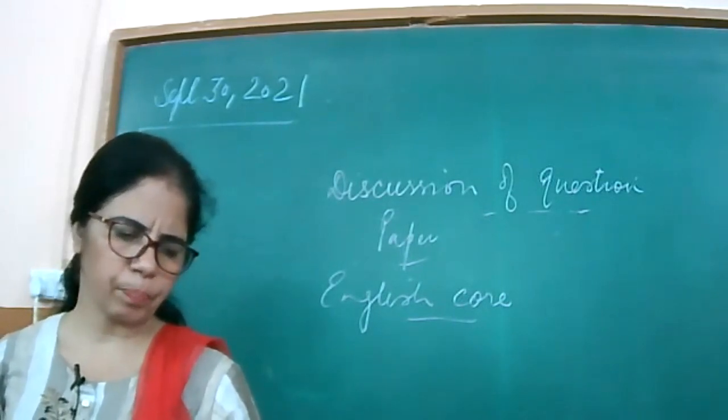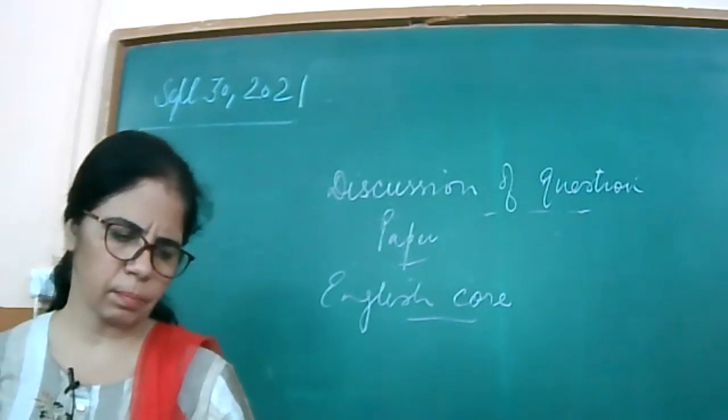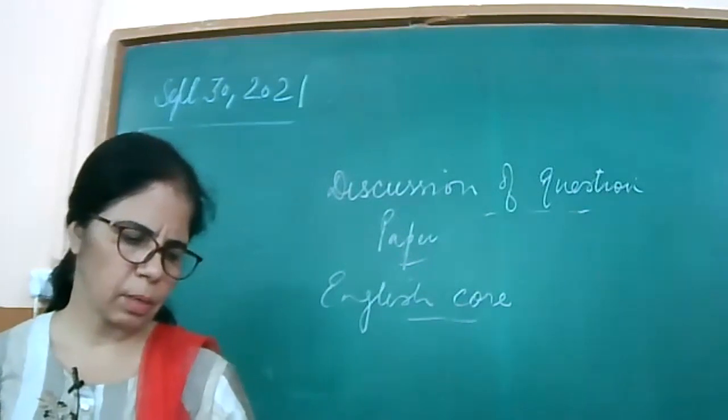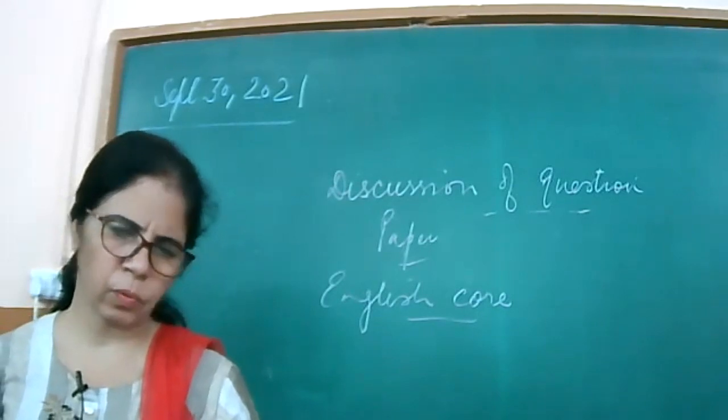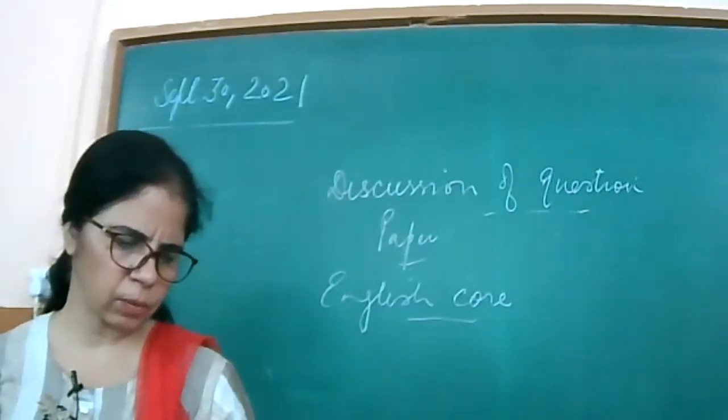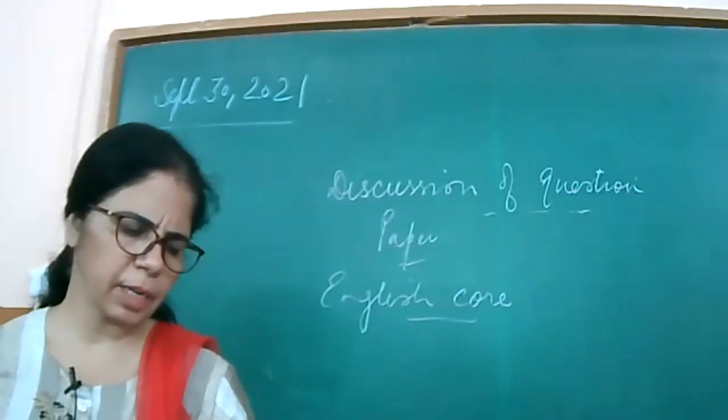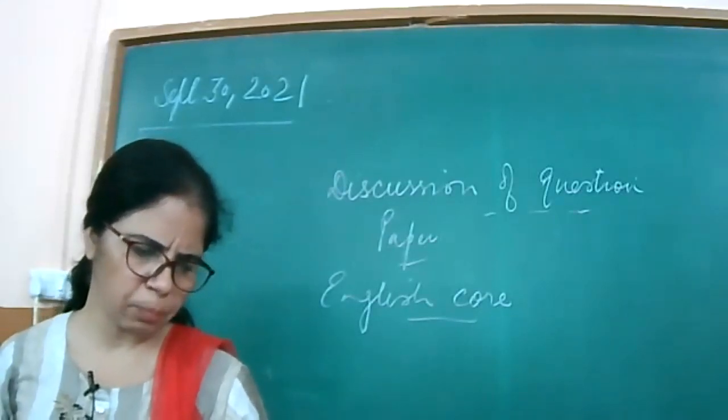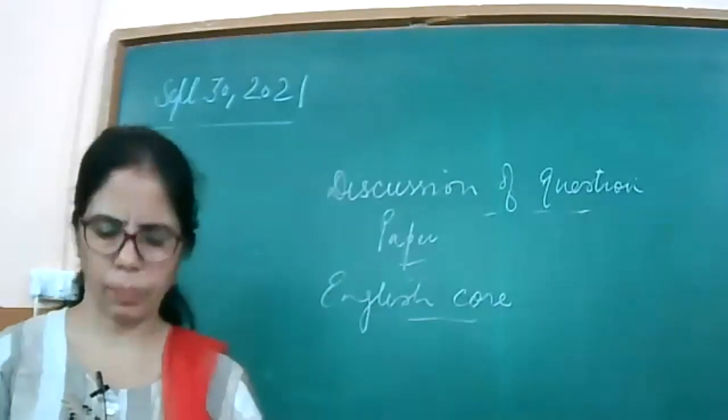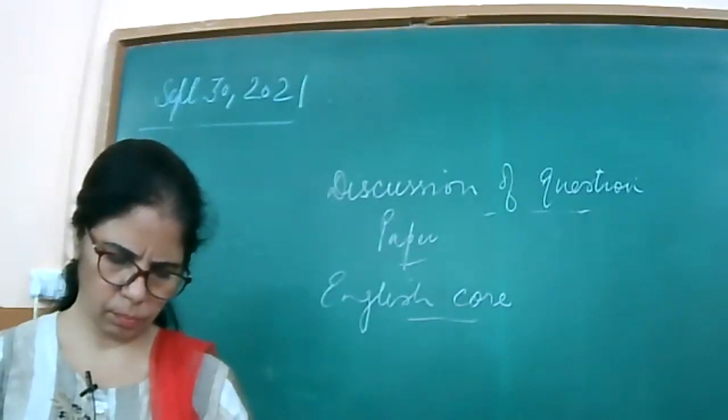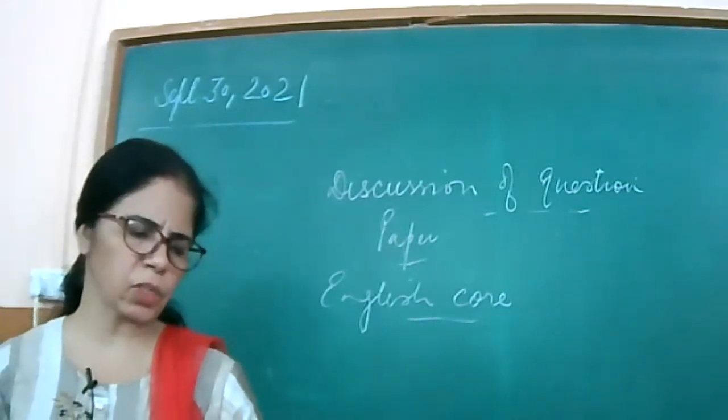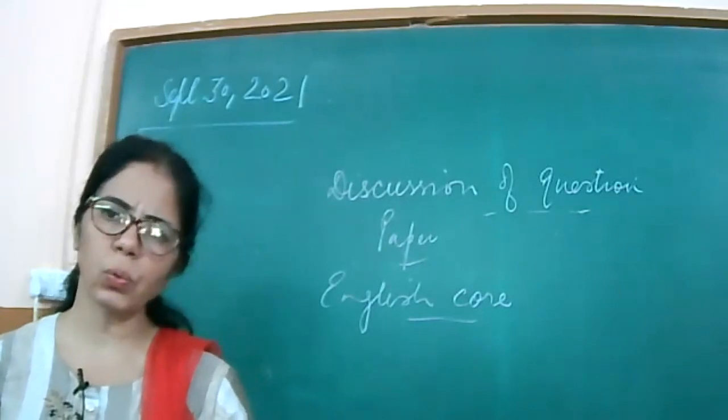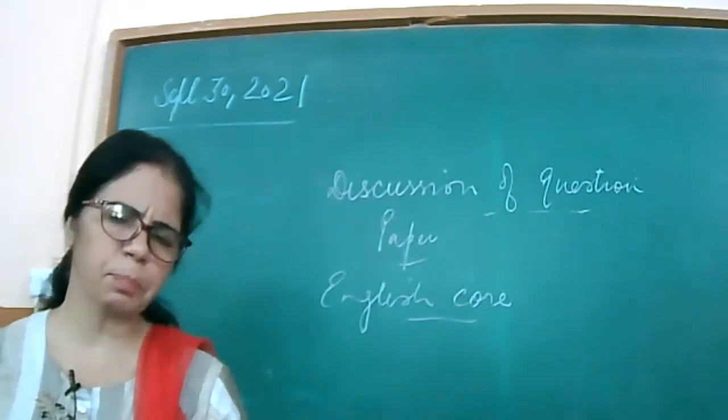30th question. What was the first indication of disaster? That is A option is correct: around 6pm when winds dropped and sky grew darker. 31st question: Who promoted the worship of Aten? That is a sun disk, 31st question here. Amenhotep IV. Right? That is C option is correct. What name did Amenhotep IV change to? That C option is correct, that is Akhenaten.